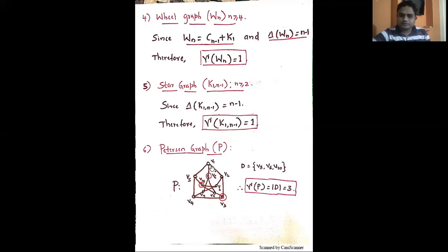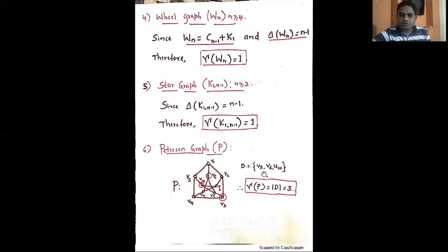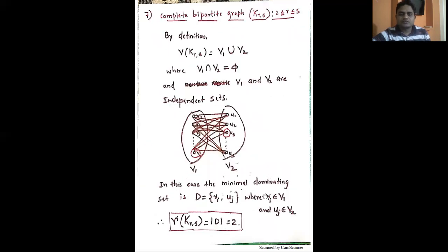For the Petersen graph, it is a 3-regular (cubic) graph with 10 vertices and 15 edges. Only three vertices are enough to cover the remaining vertices — specifically v3, v6, and v10. These three vertices form a minimal dominating set D, and the cardinality of D is 3. Therefore, the domination number of the Petersen graph is 3.